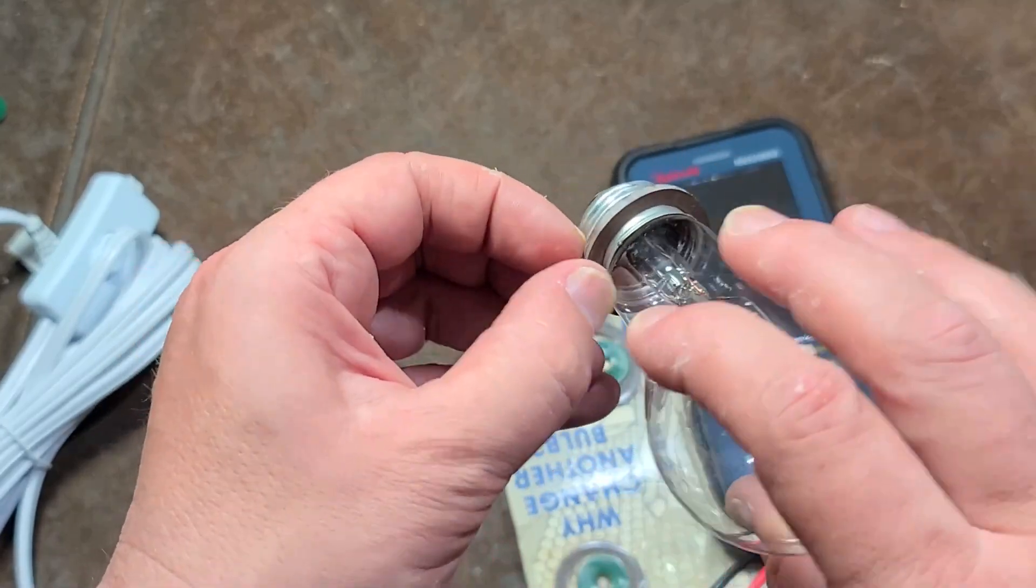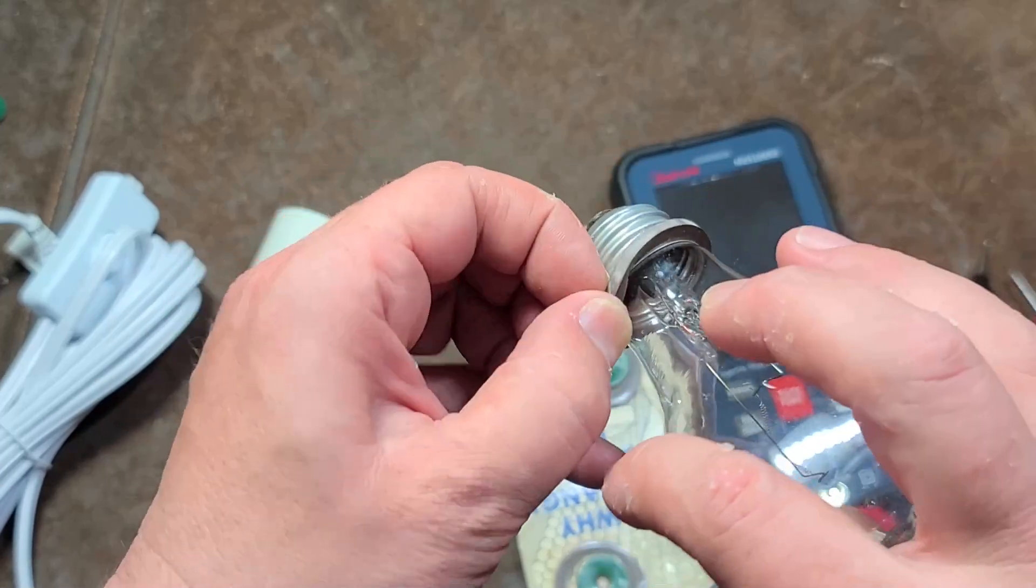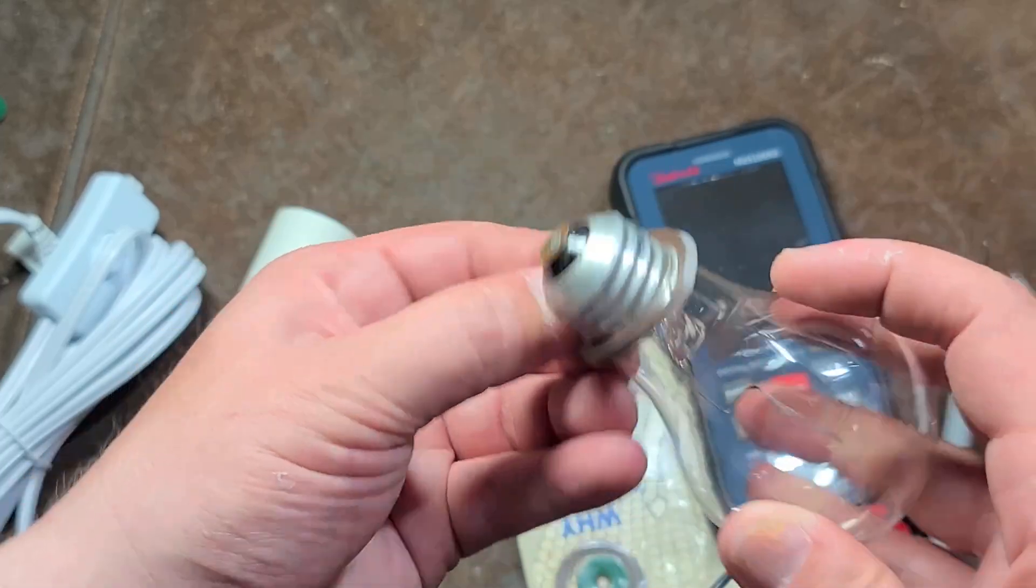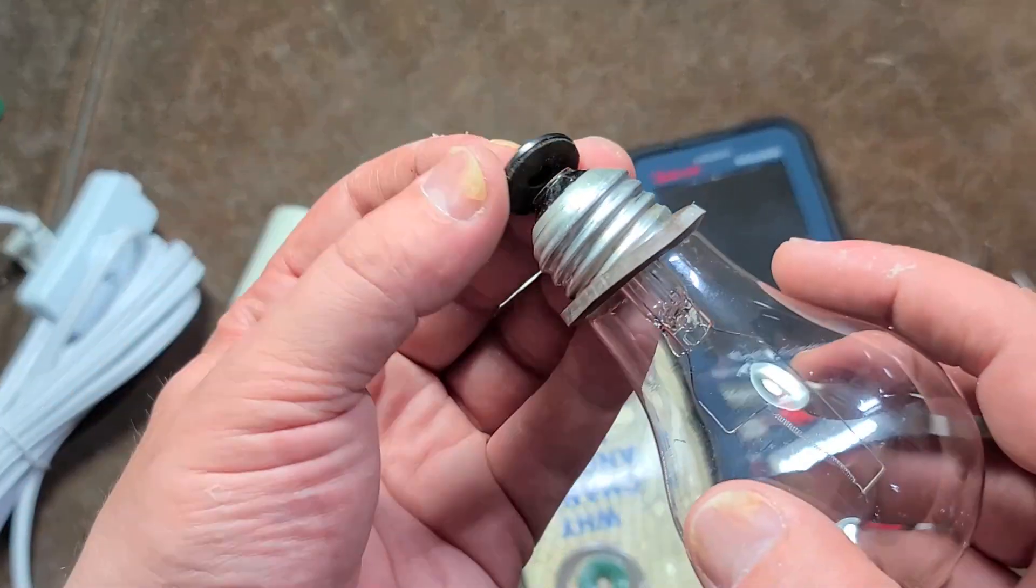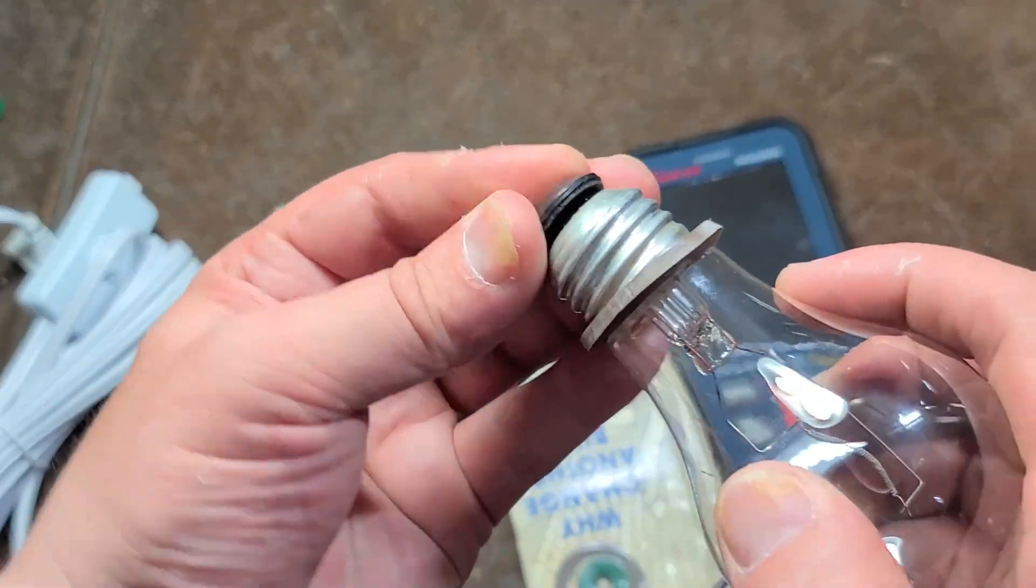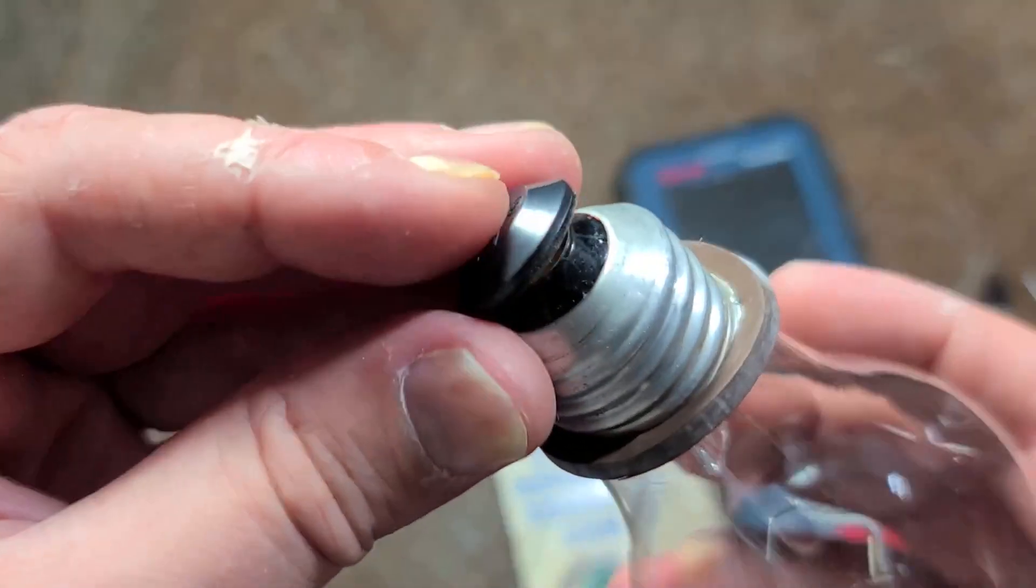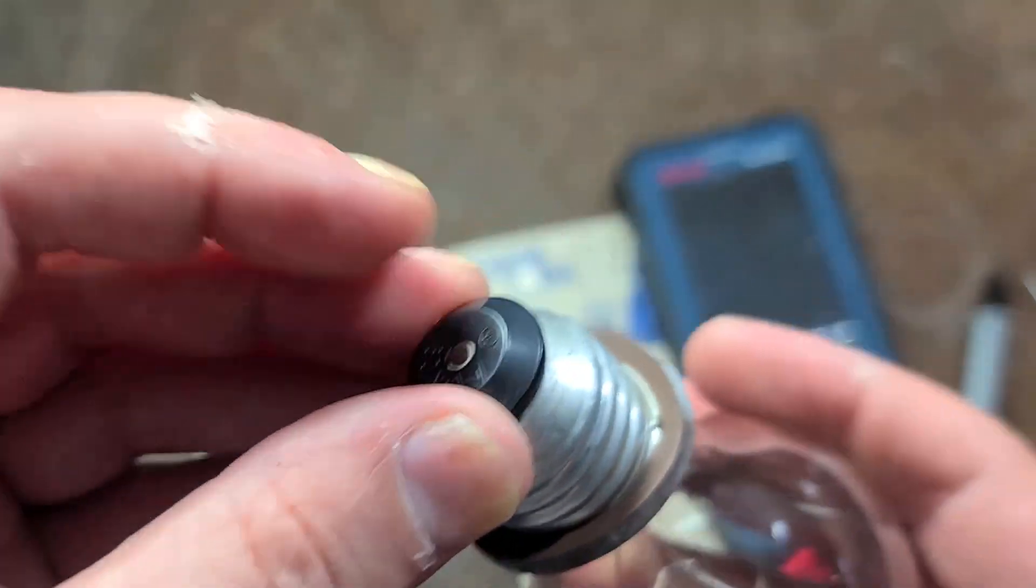And so what ends up happening is since it's an incandescent, you put the little rubber ring on like this. It must be the case that they're just sticky so that it's easier to get them installed.